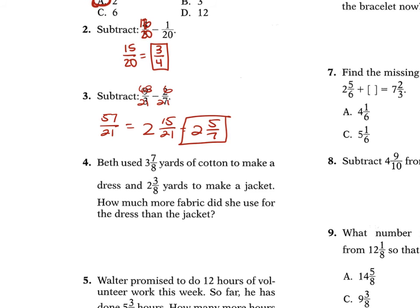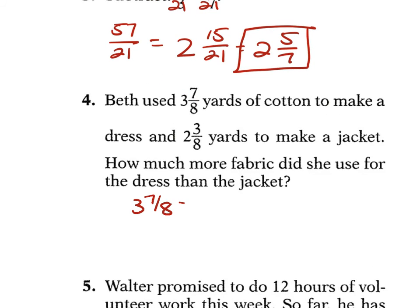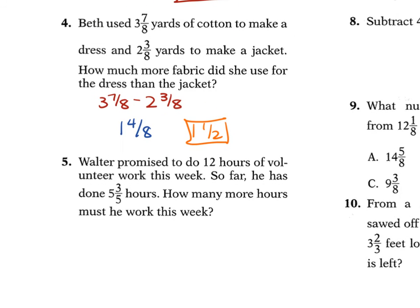Problem 4: Beth used 3 and 7 eighths yards for a dress and 2 and 3 eighths yards for a jacket. Subtracting: 3 minus 2 is 1, and 7 minus 3 is 4 over 8 — so she used 1 and 1 half more yards for the dress. Problem 5: Walter promised 12 hours of volunteer work and has done 5 and 3 fifths. Subtracting: rewrite 12 as 11 and 5 over 5, then 11 minus 5 is 6, and 5 minus 3 is 2 fifths — so he needs 6 and 2 fifths more hours.